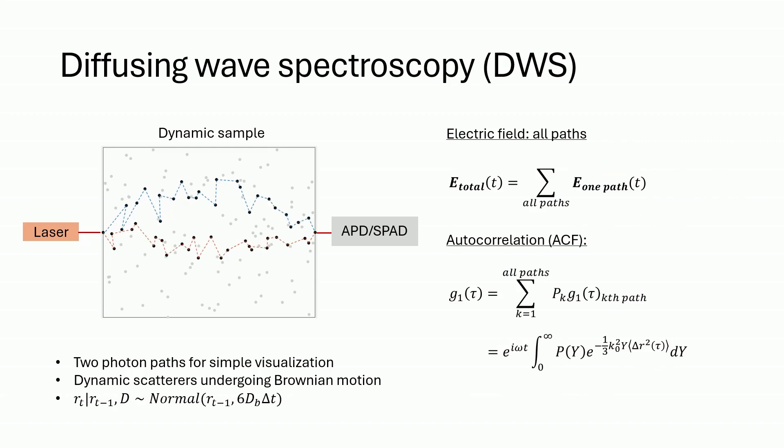The total electric field is simply the summation of fields from all paths, and the total autocorrelation contains the same exponential decay, this time weighted by a probability distribution of photon path lengths. Our quantity of interest is still in the exponential decay rate.